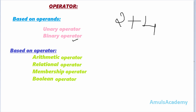As the name indicates, if a single operand is present then that operator is called a unary operator. For example, minus 4 — here minus is called a unary operator because it contains a single operand, that is 4. In the case of a binary operator, it contains two operands. For example, 2 plus 4 — here plus is a binary operator because it contains two operands.